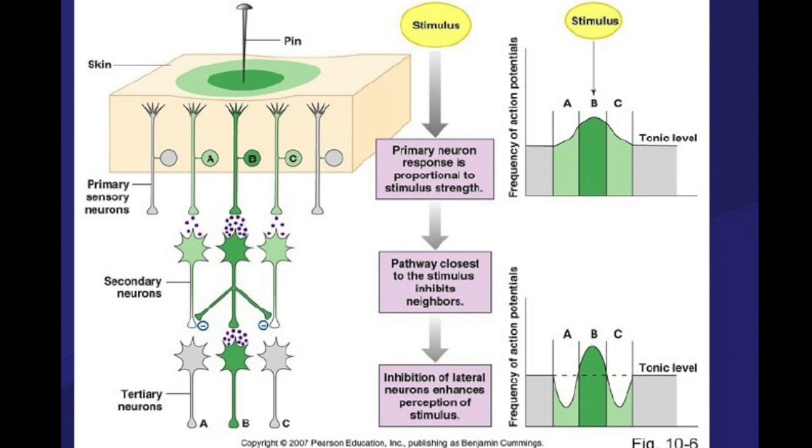So this lateral inhibition enhances the perception of stimulus by inhibiting their neighboring neurons, as you can see in this graph also. The best case scenario is seen in vision, where center rod cells are getting activated and the peripheral rods are getting deactivated to create a sharp and bright image out of dark.